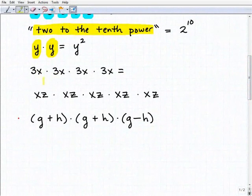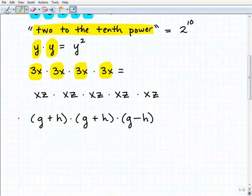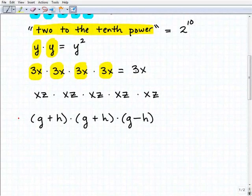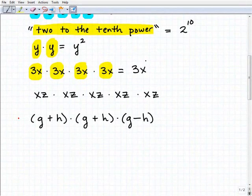How about this problem here? What do we have? We have 3x being multiplied by itself 1, 2, 3, 4 times. So we would write that this way: 3x to the fourth.